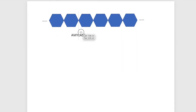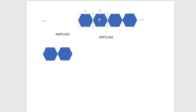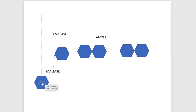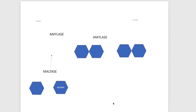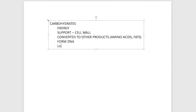In the digestion chapter, you will identify that starch is broken down first by amylase into many two-unit sugars — the disaccharides — then maltase breaks up these maltose units into single-unit glucose. Functions of carbohydrates are plenty: one is for energy, another is for support, and they can also be converted to other compounds for a variety of uses — for DNA, for lubricants, and nectar.